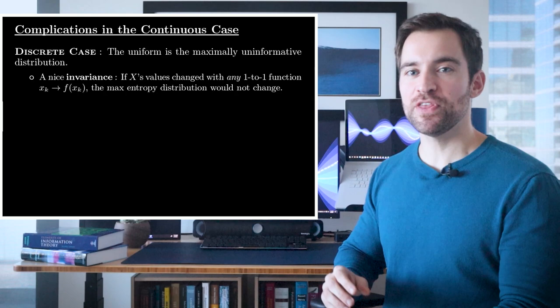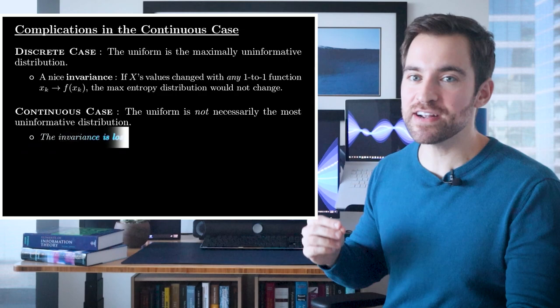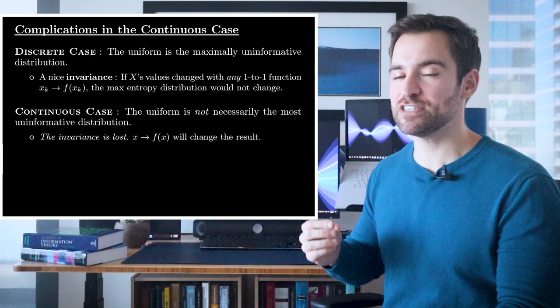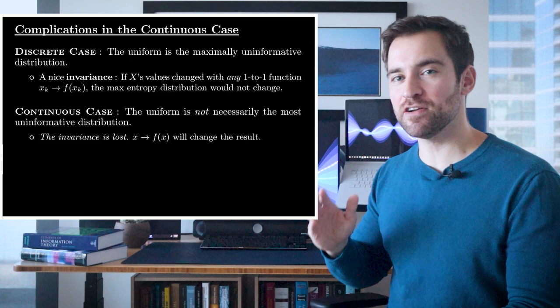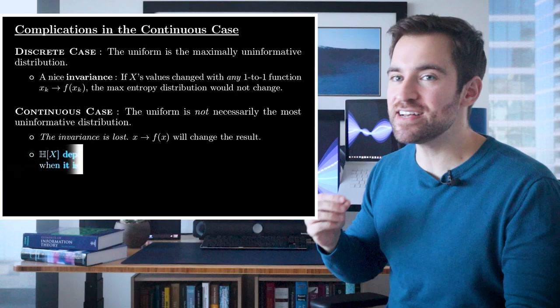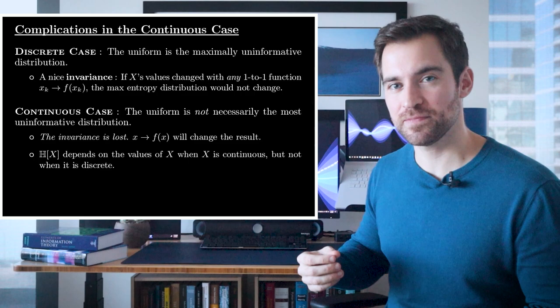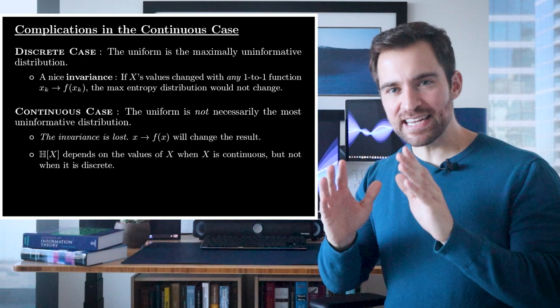Now, let's consider the continuous case. As we'll see, the uniform distribution is not necessarily the best choice. And the reason for this is the invariance is lost. If you map X to some f of X, you may get a different max entropy distribution. The reason is because in the discrete case, the entropy does not depend on the values of X. It only cares about their probabilities. In the continuous case, the entropy does depend on the values of X. This is because it's an integral and you have that annoying DX term.